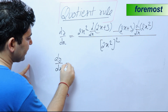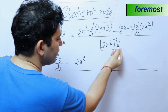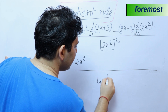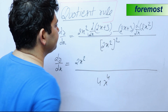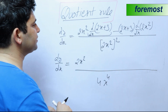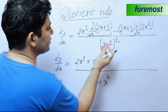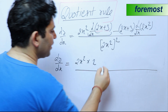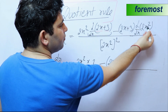Therefore, dy upon dx is equal to: 2x squared as it is. For the denominator, the square of 2 is 4, and x squared squared gives x raised to power 4, so the denominator is 4x raised to power 4. In the numerator, differentiating 2x plus 3: the differentiation of 2x is 2, and the differentiation of 3 is 0, so we have 2x squared into 2, minus 2x plus 3 as it is, and then the differentiation of 2x squared.